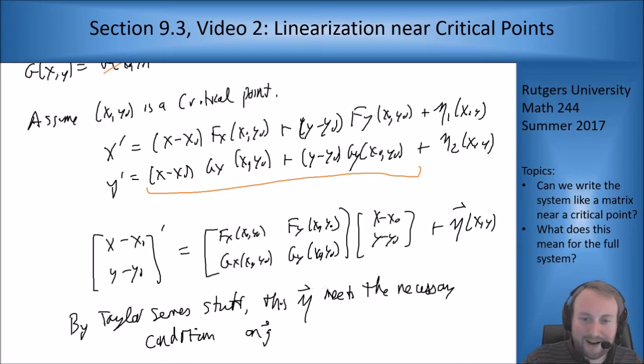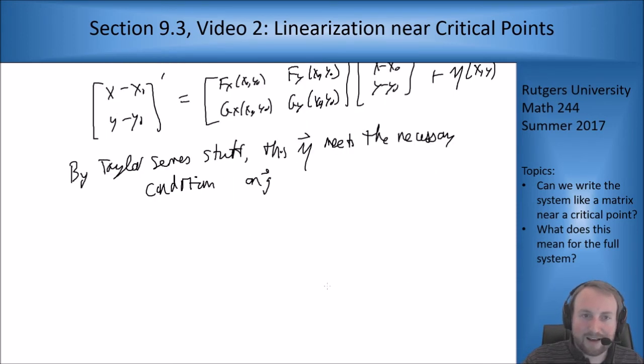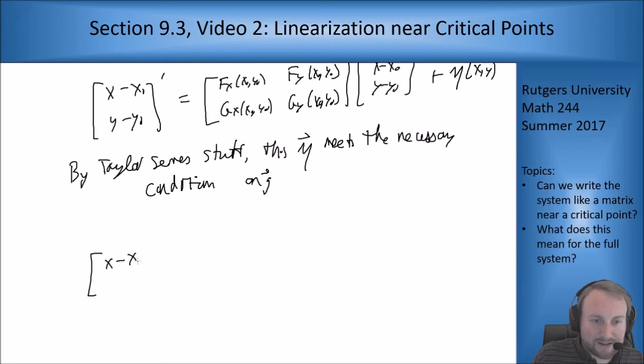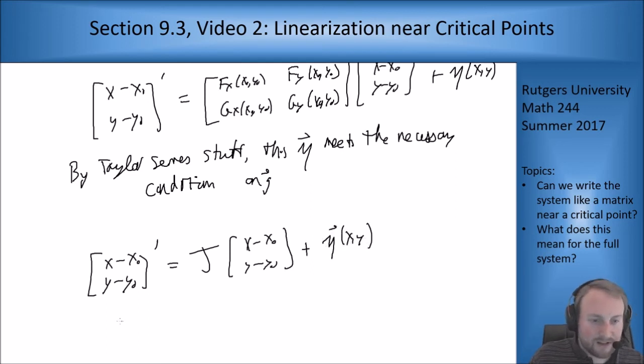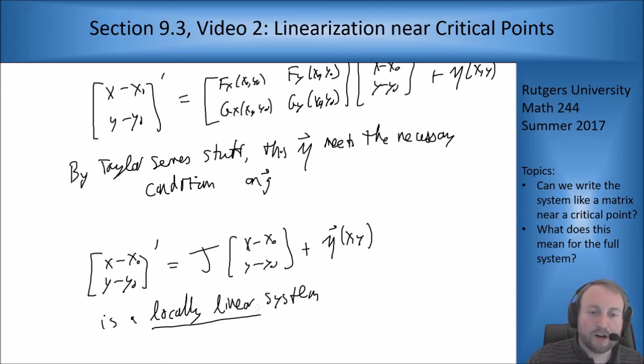So what we get out of this is that [x-x₀, y-y₀]' equals some matrix J times [x-x₀, y-y₀] plus some η(x,y) is a locally linear system.